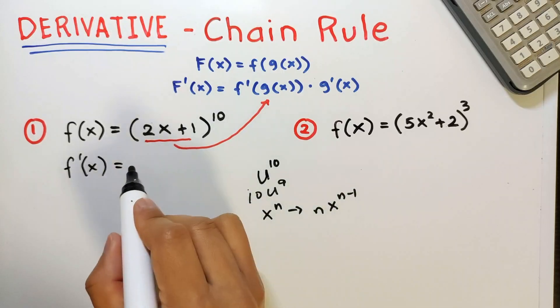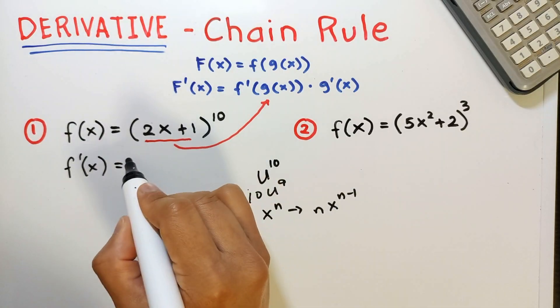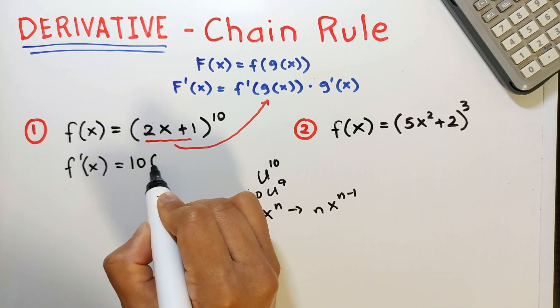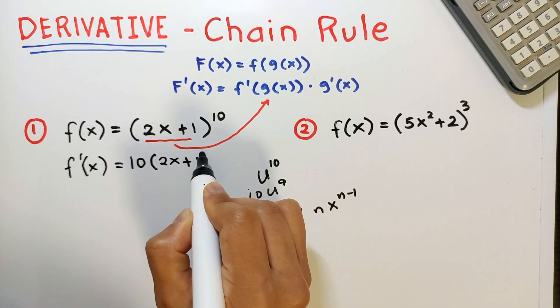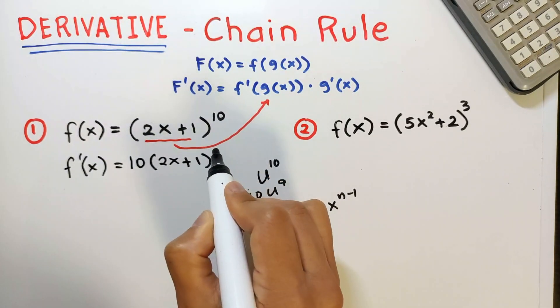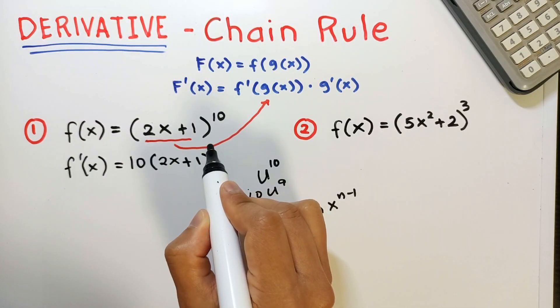Now let's do that pattern here. So we have bring down 10 as a coefficient, copy the base 2x plus 1, and then minus 1 from the exponent. So that's 10 minus 1 is 9.